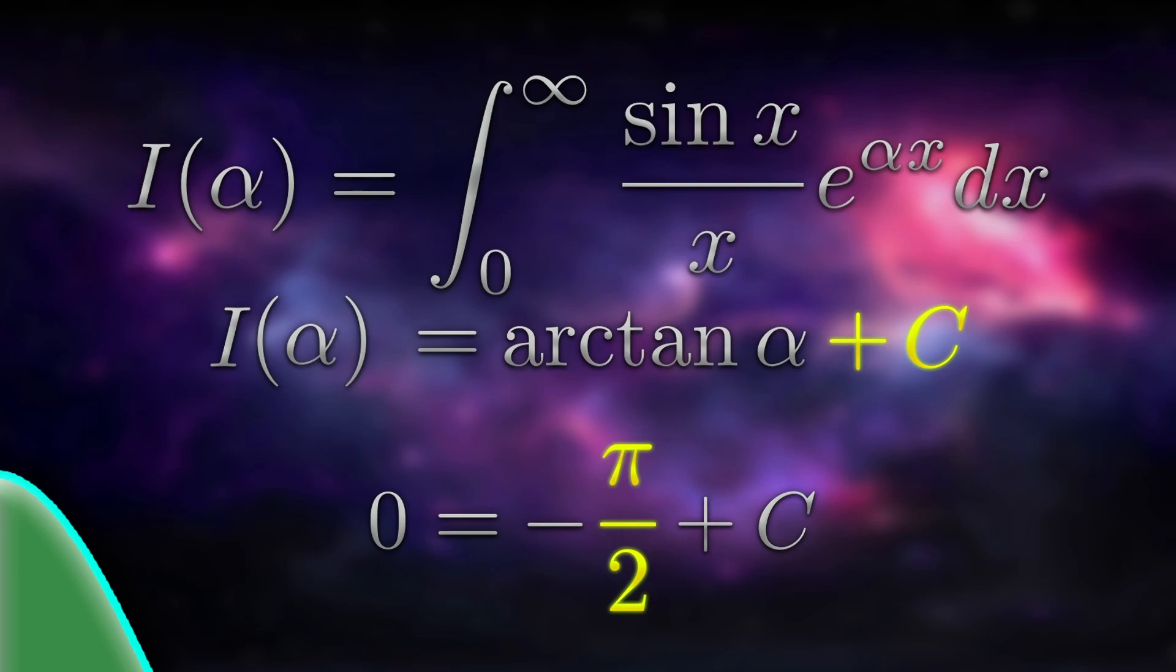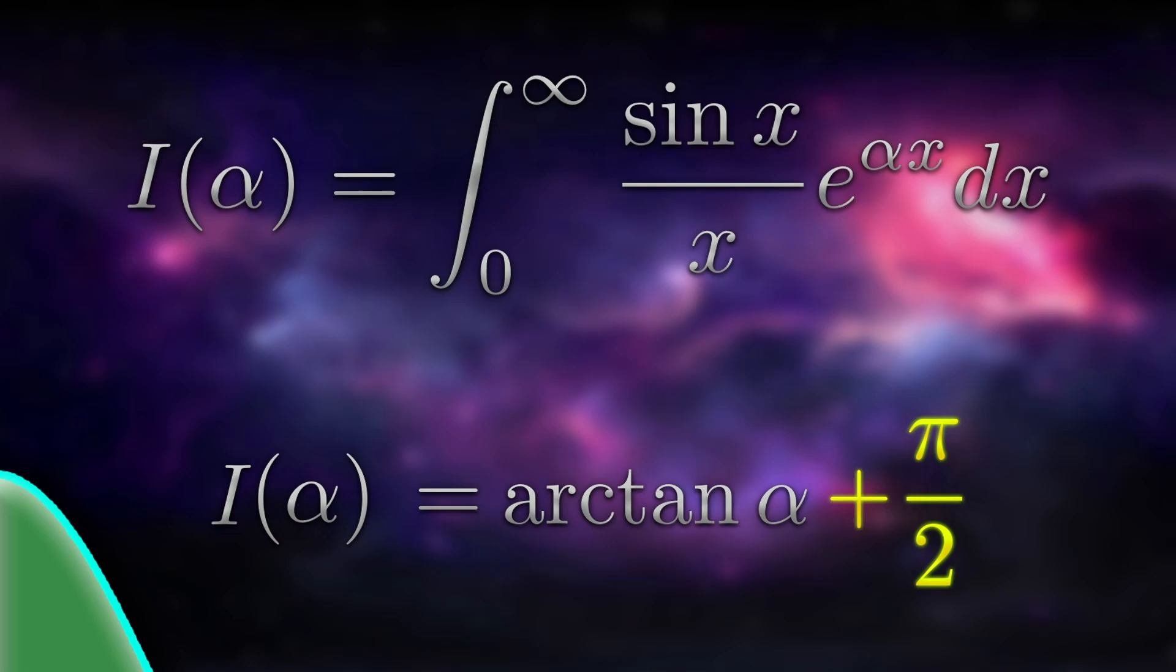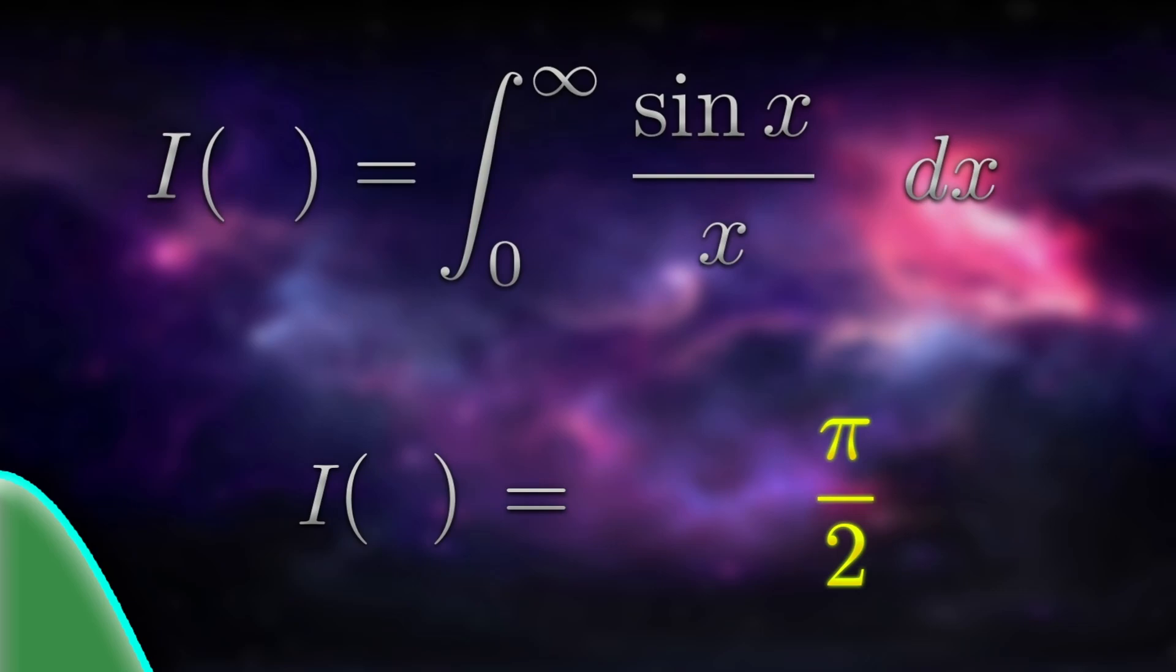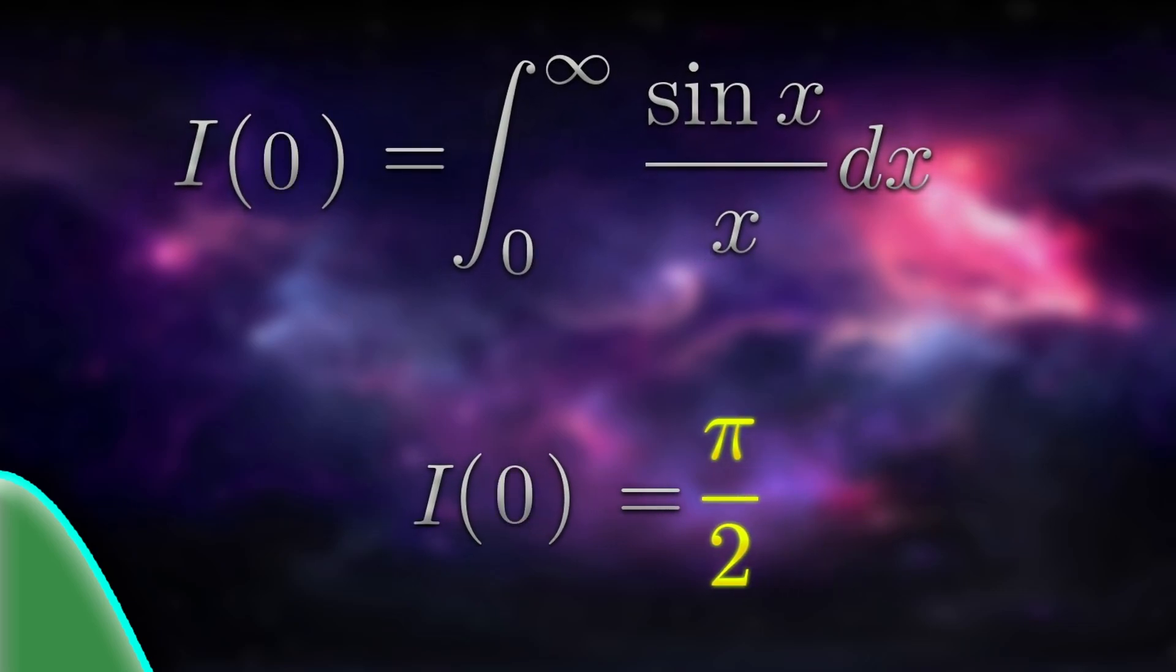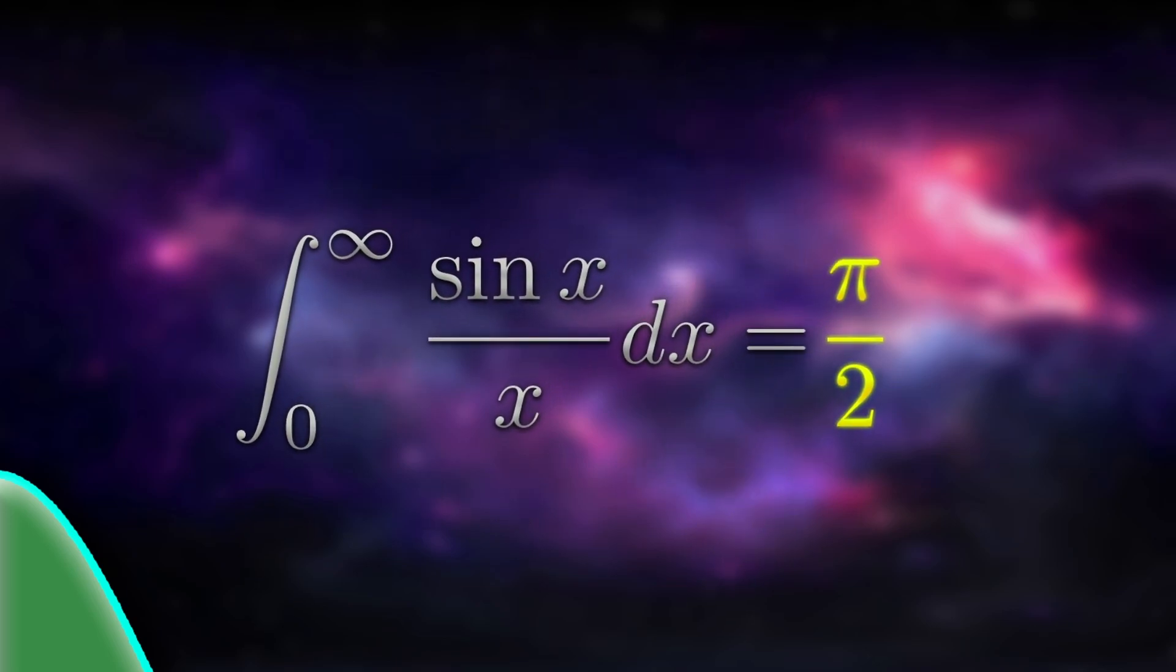Hence, i of alpha equals arctan alpha plus pi over two. Finally, we're ready for i of zero. Arctan of zero is zero, so i of zero is pi over two. i of zero is the integral from zero to infinity of sin x over x dx. And so, that integral is pi over two.